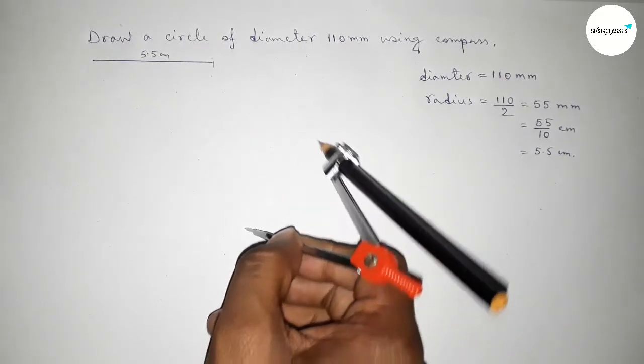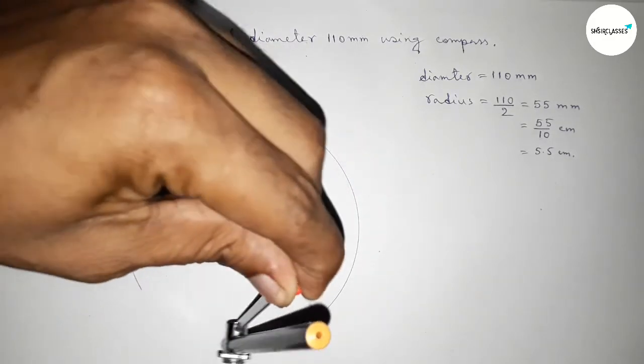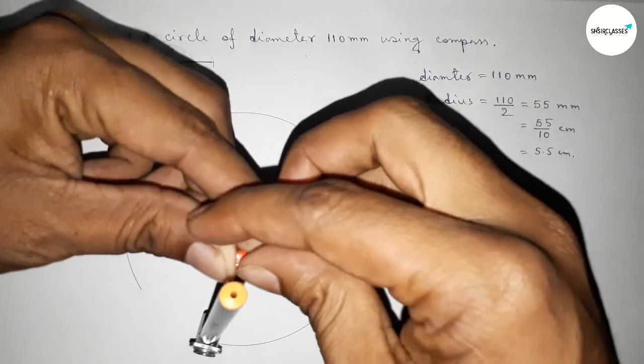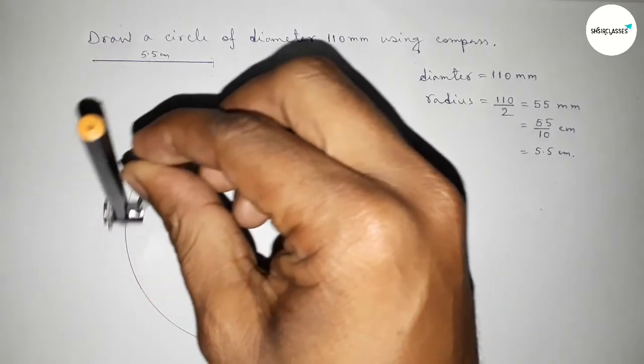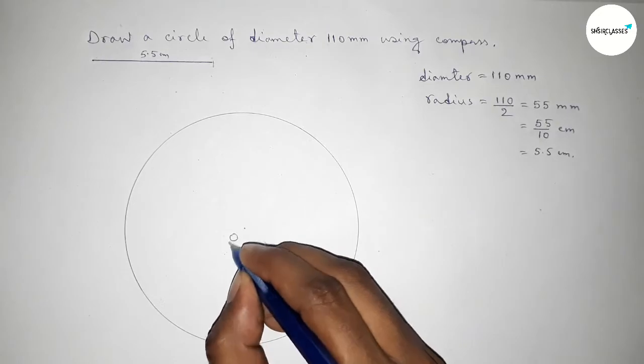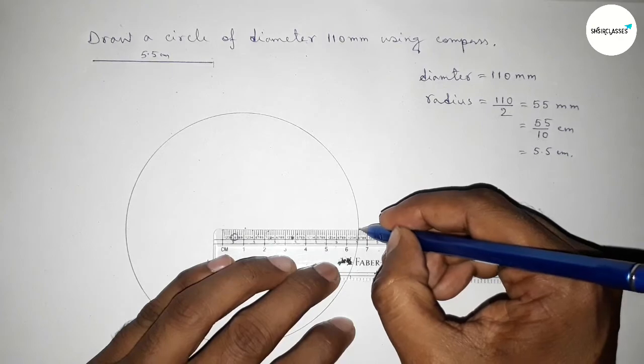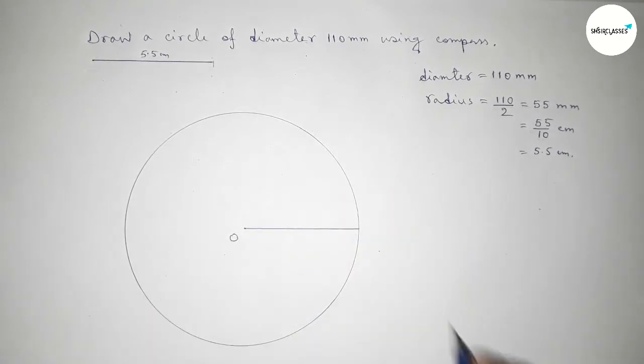Now drawing here an arc by this way which represents a circle. So this is the center, taking point O here. Now joining this line, and this is the radius of this circle.